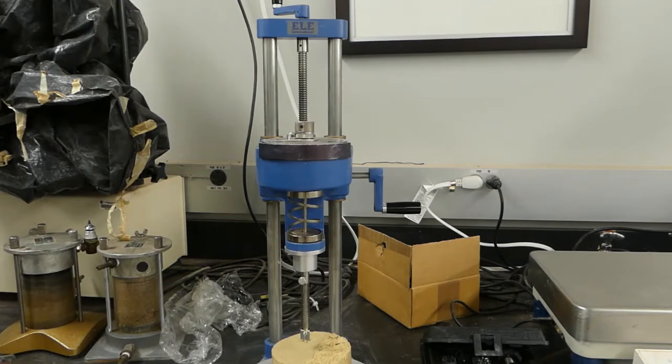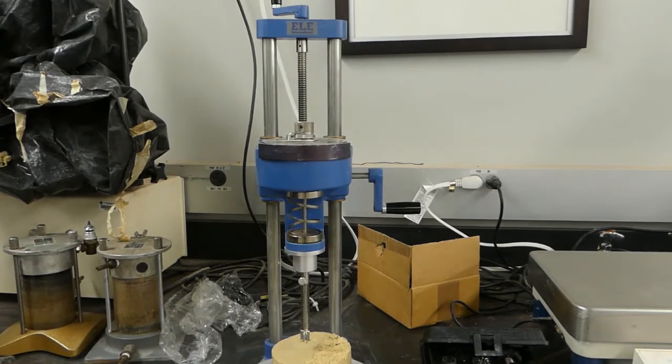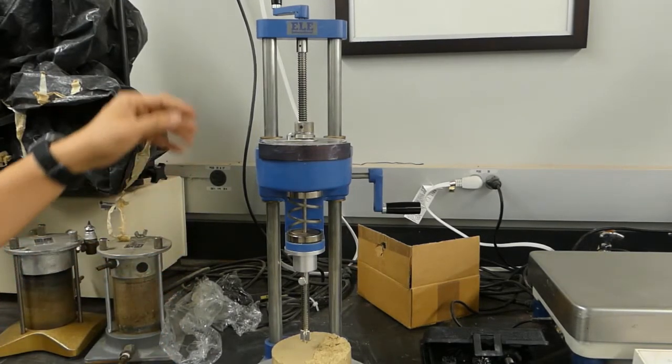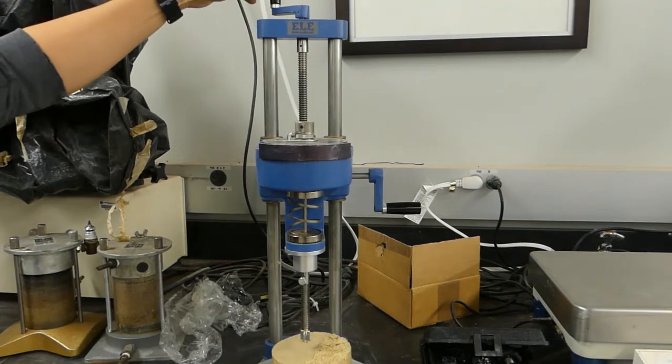This is the lab vane equipment. It comes with two main parts. First, you have a handle here.